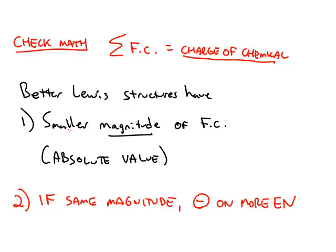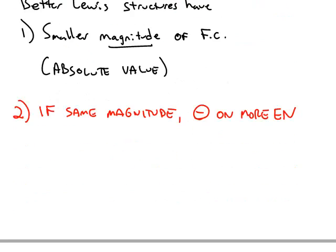And when you do this, what you're looking for is the smallest absolute value of formal charges. That's going to be a better Lewis structure. And if you have two Lewis structures or more that have the same magnitude, then you look where the negative charges.